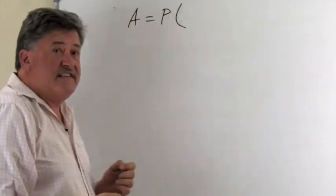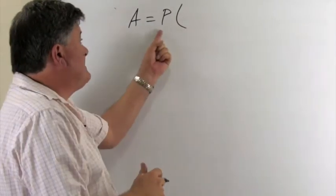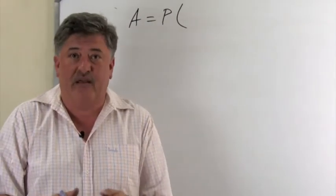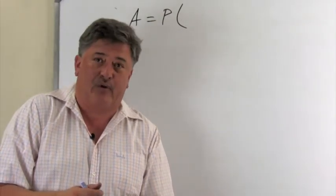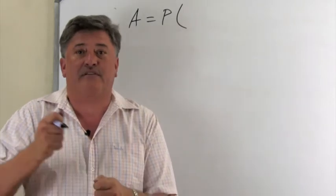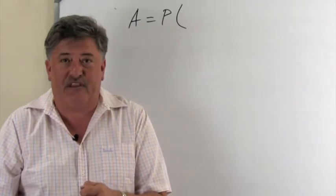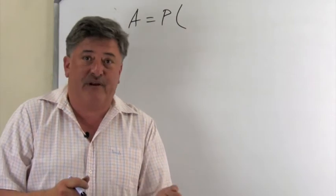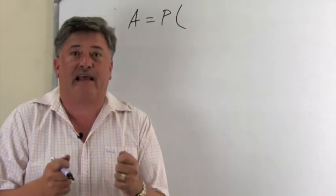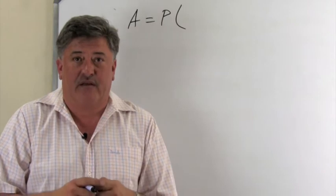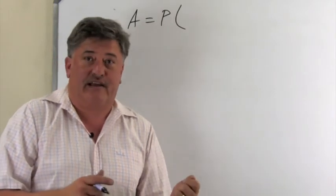Very similar to our simple interest because the symbols mean the same. P, the present value, the amount that I will invest. A, the amount I will get back, I will receive at the end of the period. Now, if it's simple interest or compound interest, that A and P stand for the same thing. The only difference is how we calculate it.